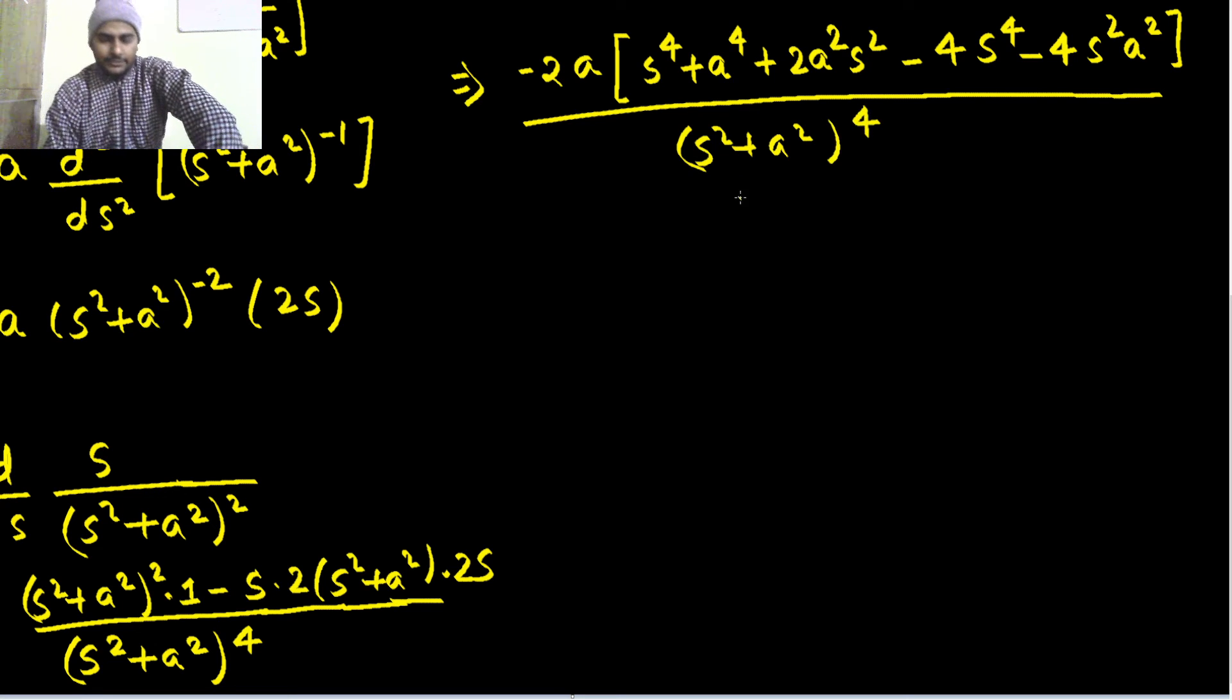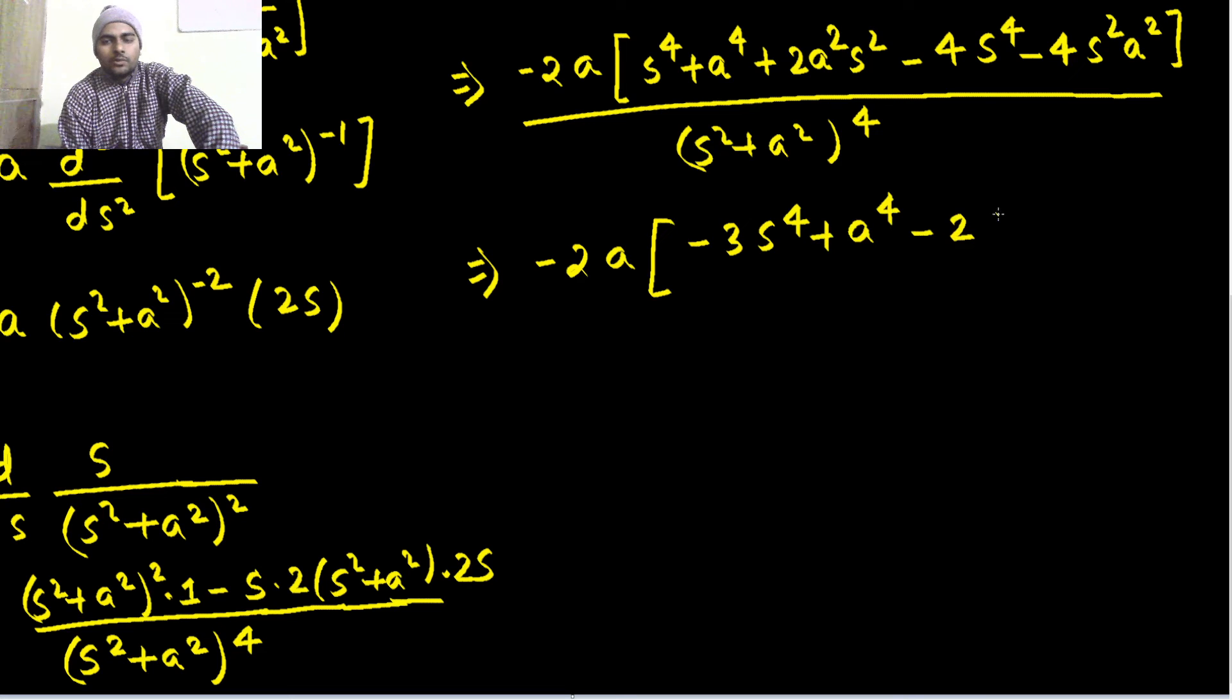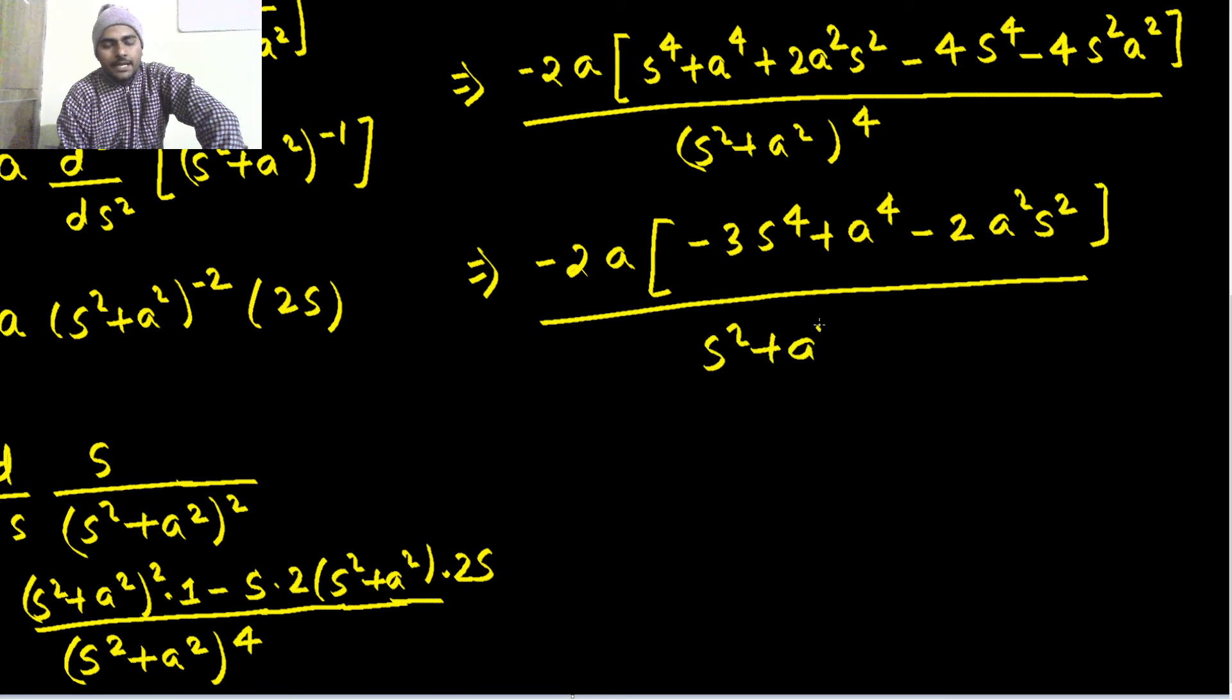So, as I can see, this now becomes, 4s power 4 minus, so minus 3s power 4. So, a power 4 plus a power 4 minus 2 a square s square plus a square power 4.